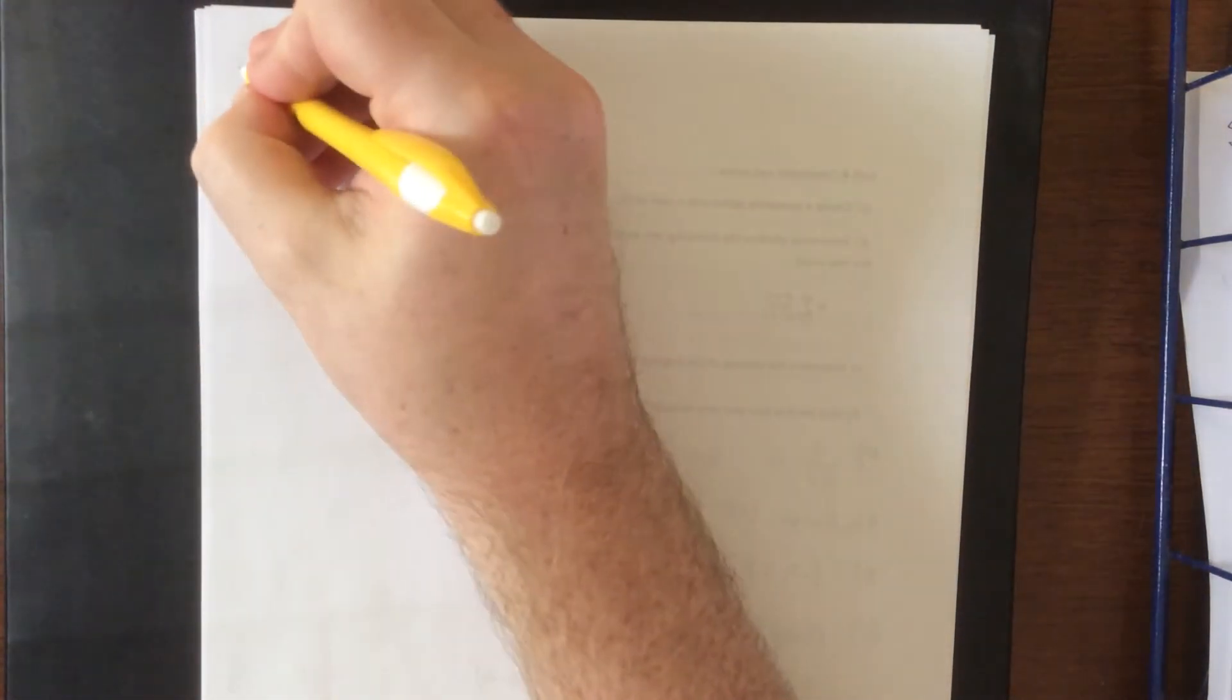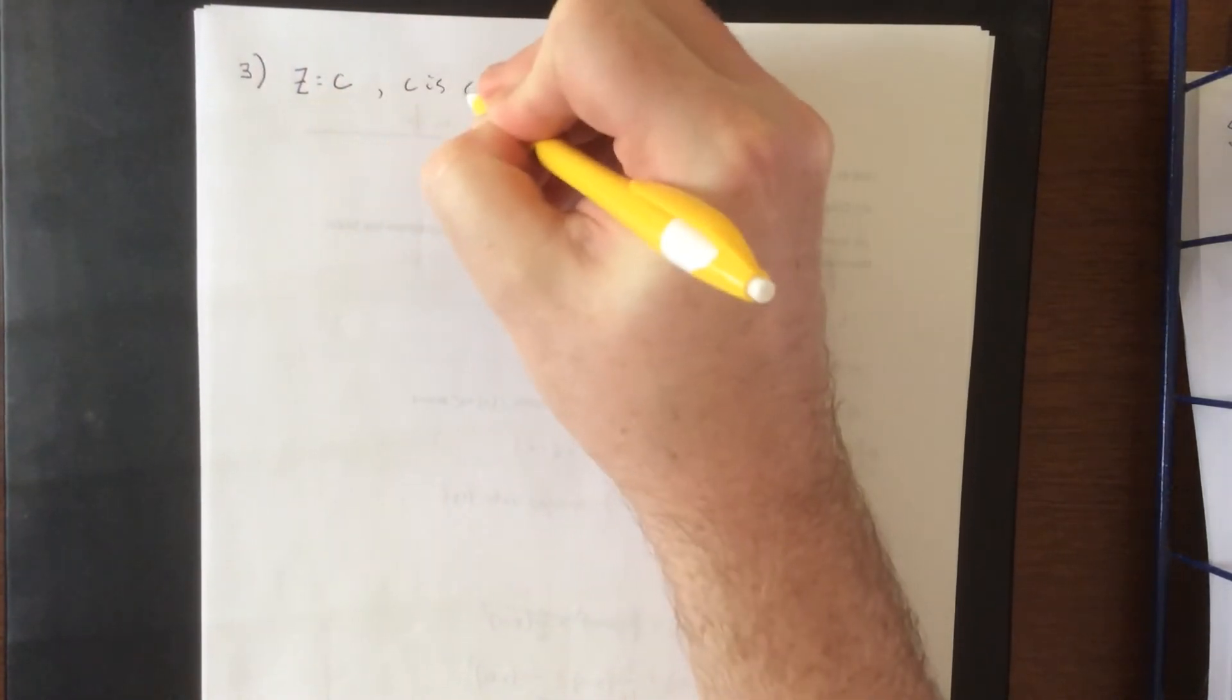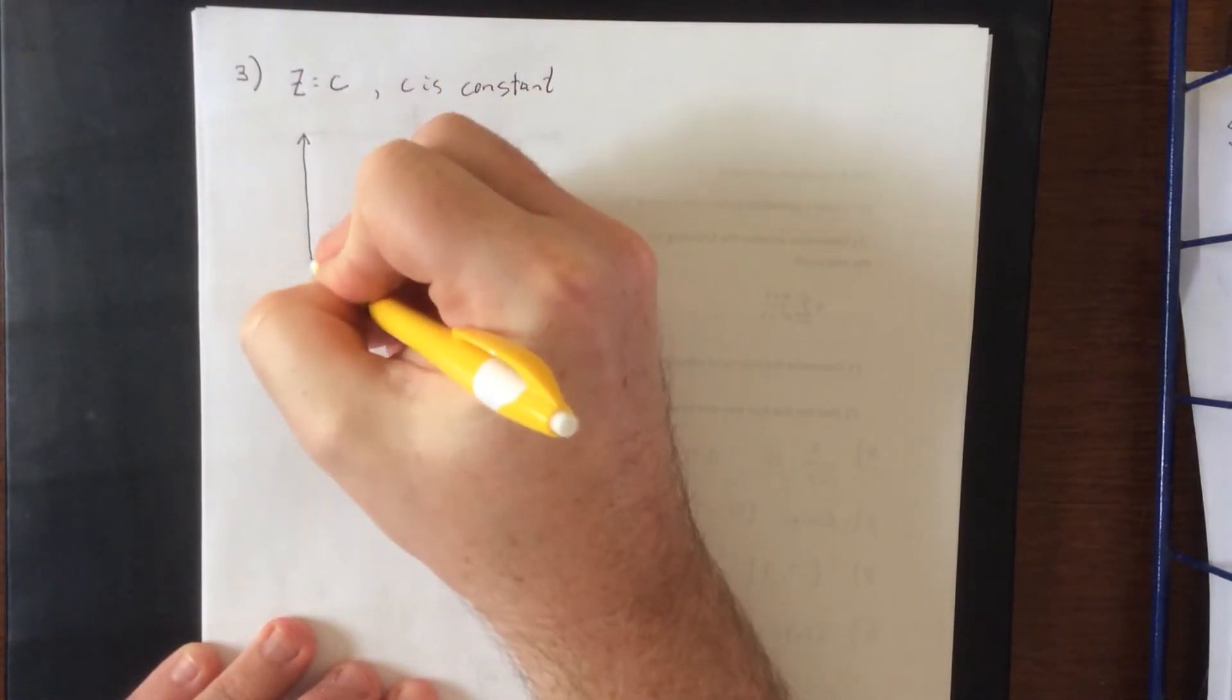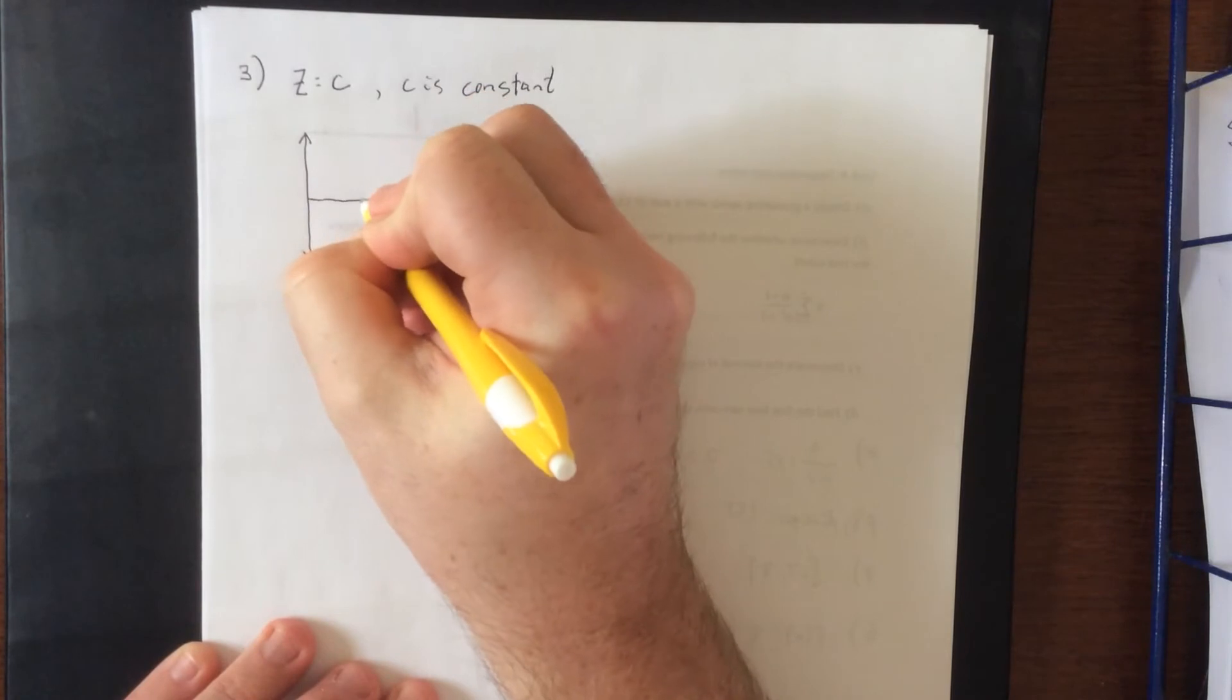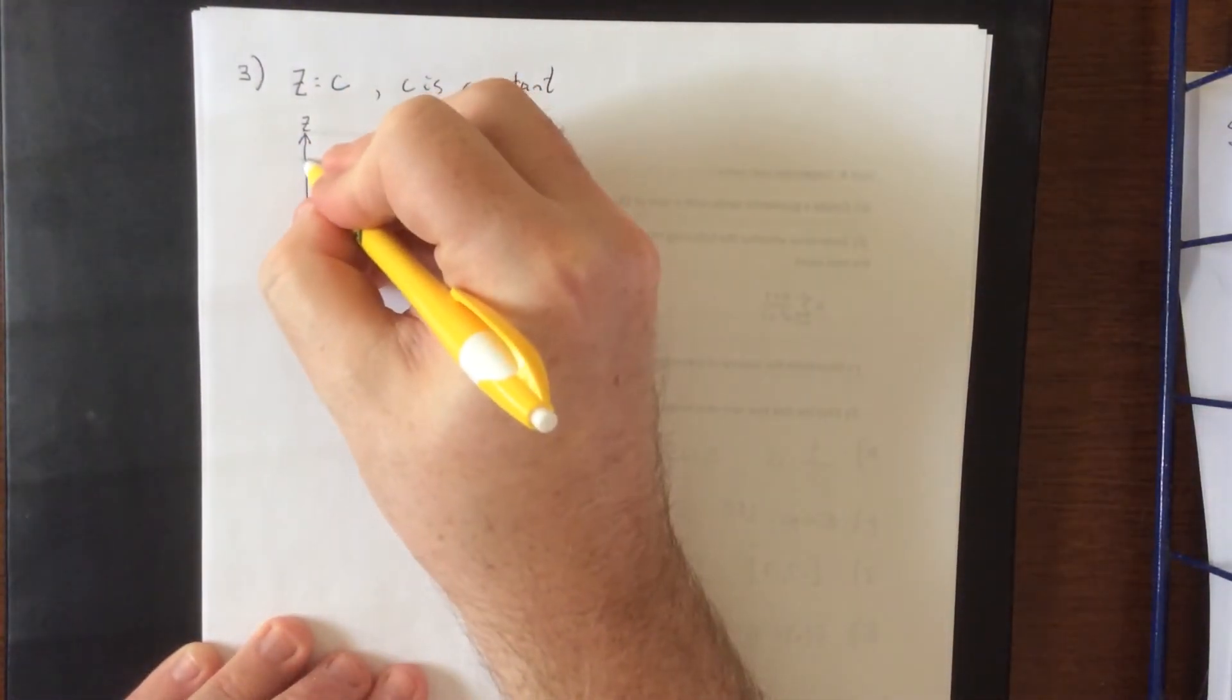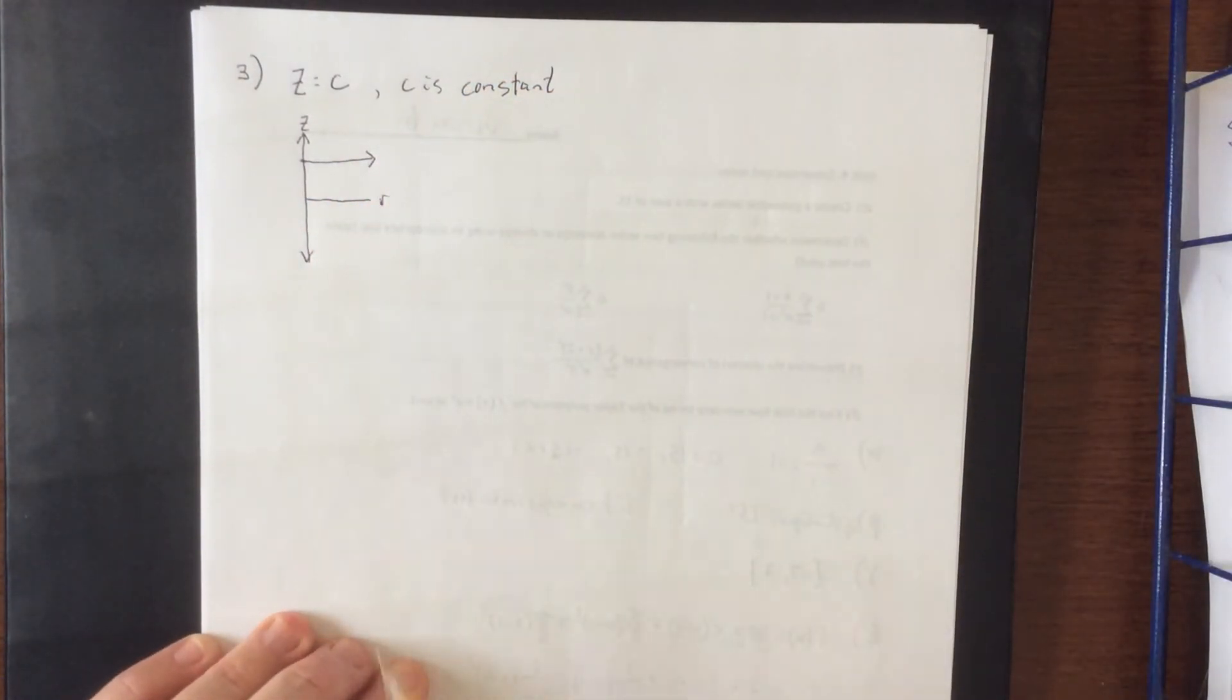The next one I want to talk about is z being a constant. There's not a whole lot of use of talking about an x-y trace because there is no x or y in this thing. So instead, let's talk about the Rz trace. Now, if z is a constant, that is simply going to look like a horizontal line when we consider z as the vertical axis. So imagine I take this ray and I rotate it about the z-axis.